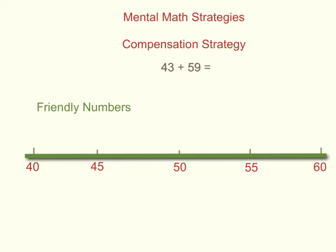If we look at the numbers from our question, we have to ask ourselves which one of these numbers is close to a friendly number. If we put 43 on the number line, we find that it is in between 40 and 45. If we put 59 on our number line, we notice that it is very close to 60. Therefore, 59 is a number that we can use to compensate because it's very close to a friendly number.